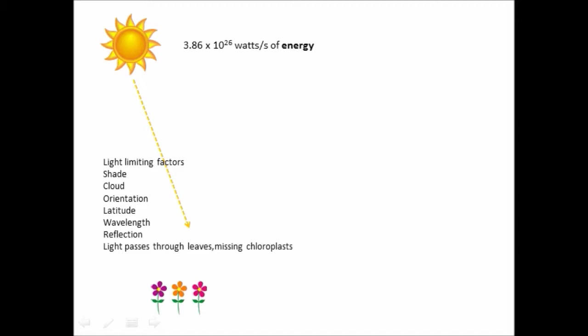At the equator, the sun tends to be directly overhead. And if it's directly overhead, it has to pass through a much thinner layer of atmosphere. Light leaves the sun at various wavelengths. And the wavelength of light, which is the visible spectrum, is just a tiny part of the total solar energy leaving the sun.